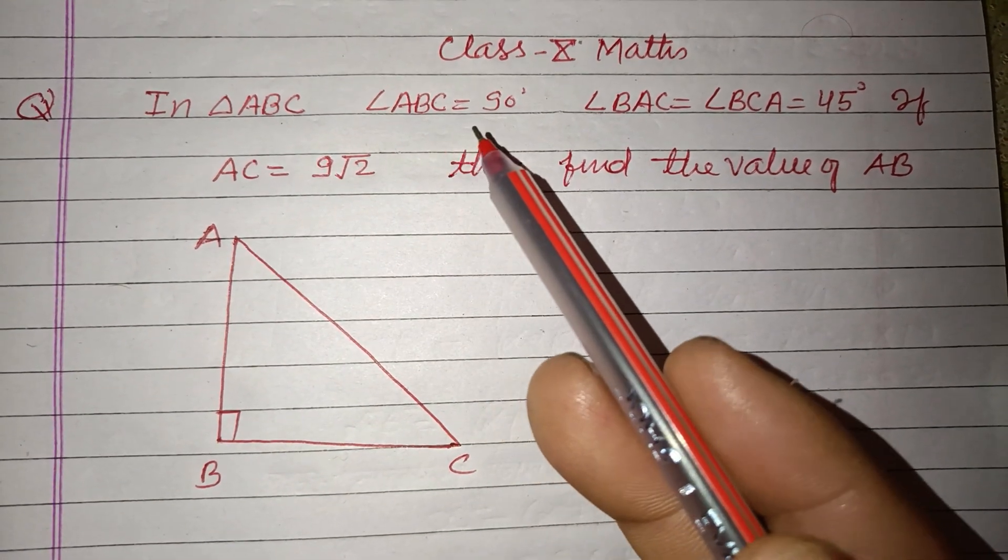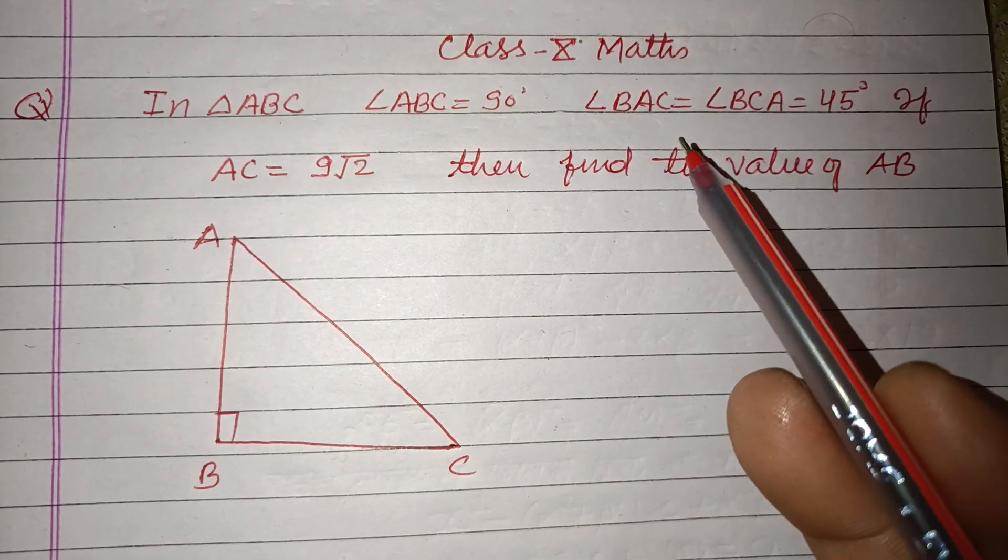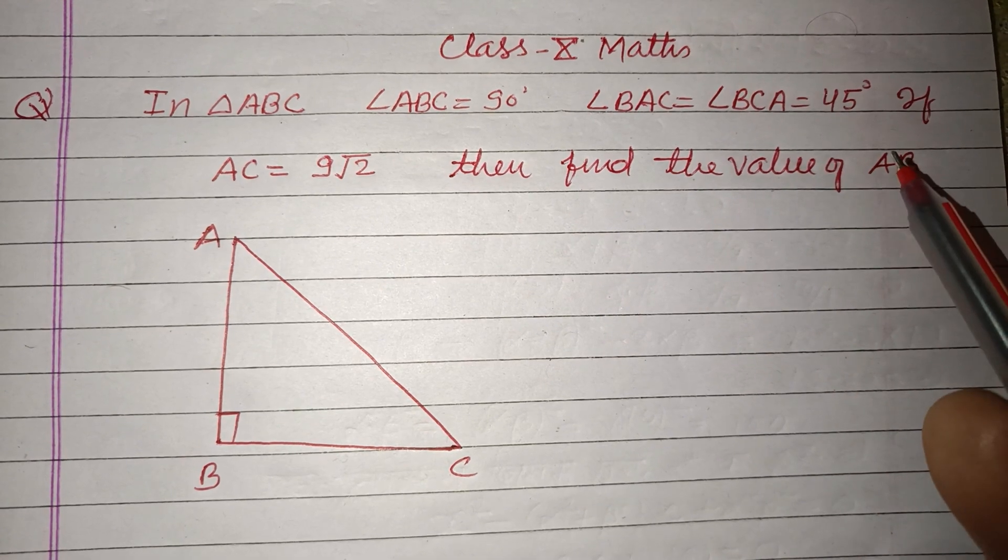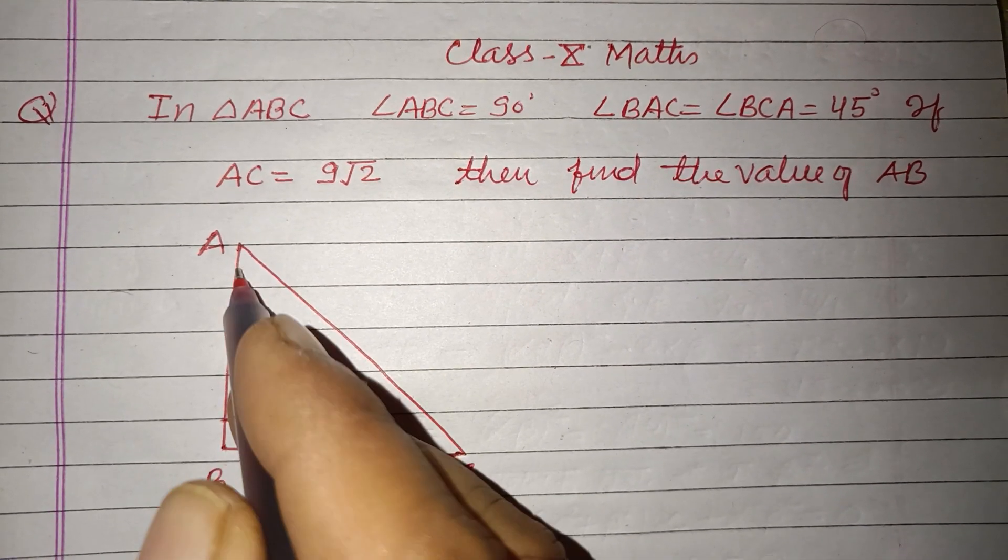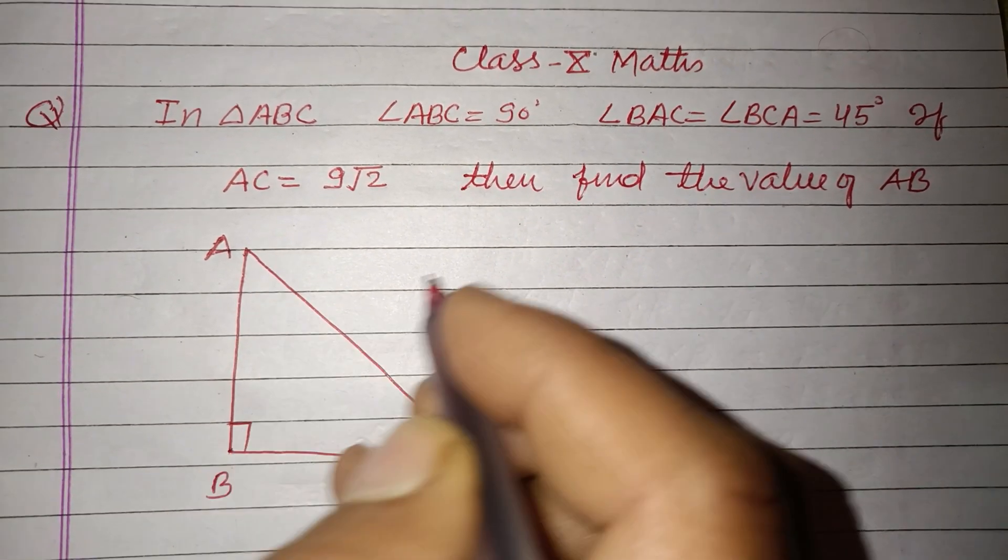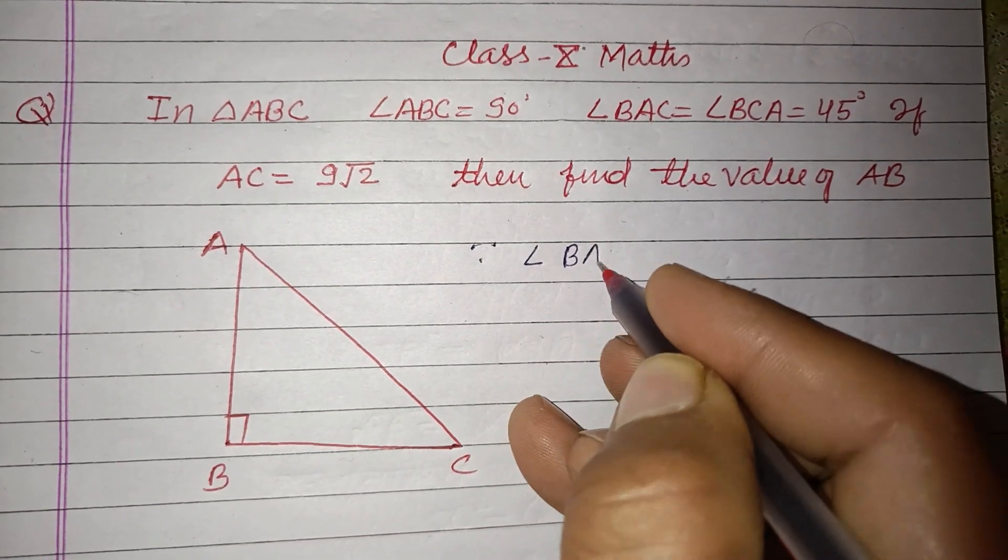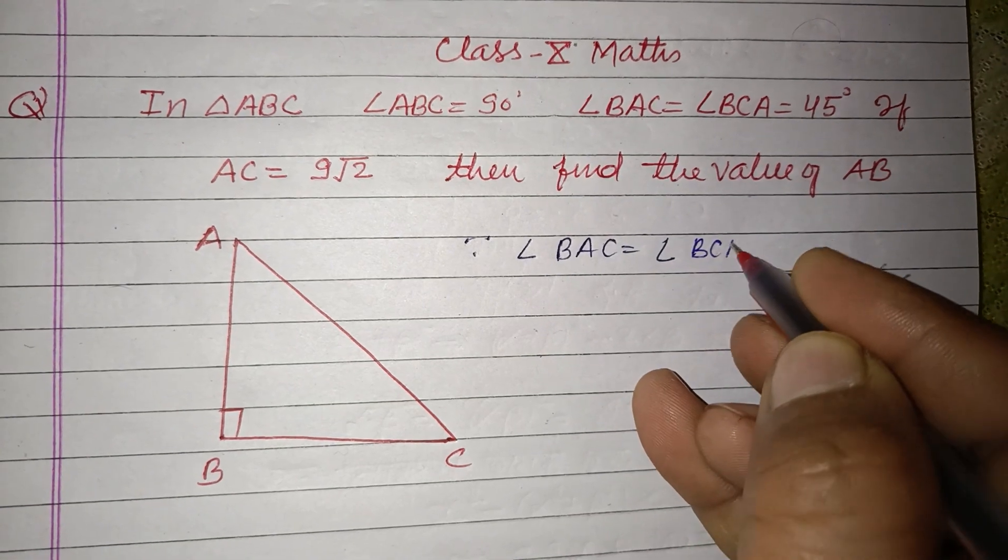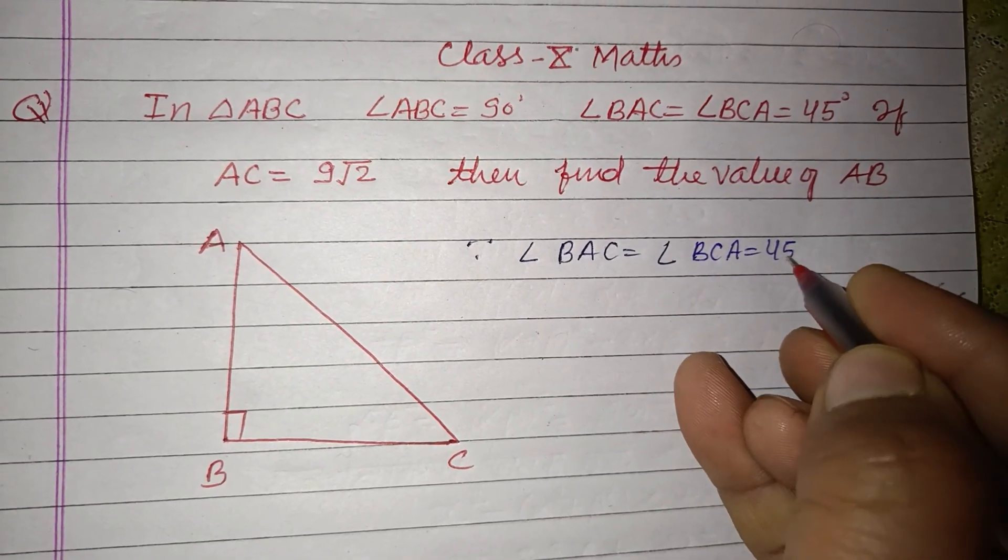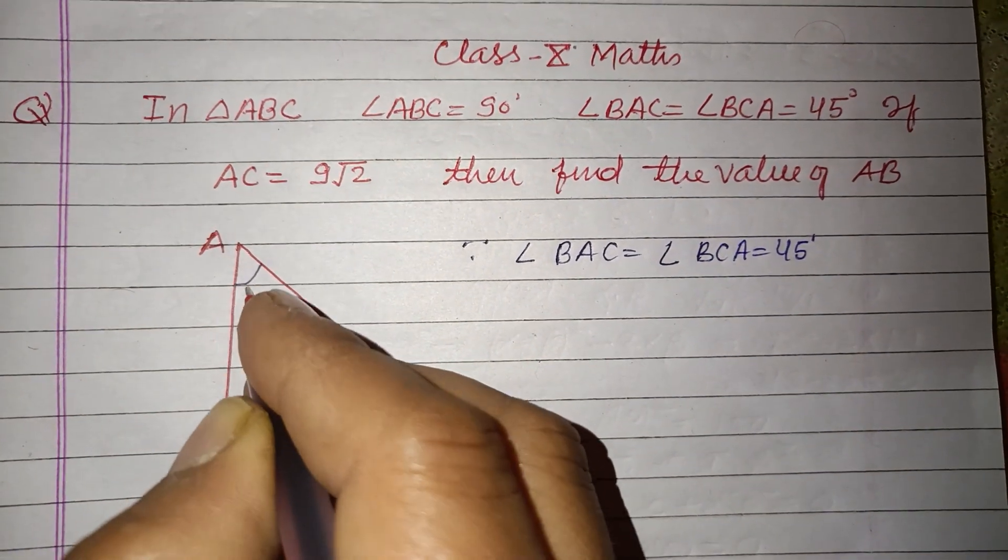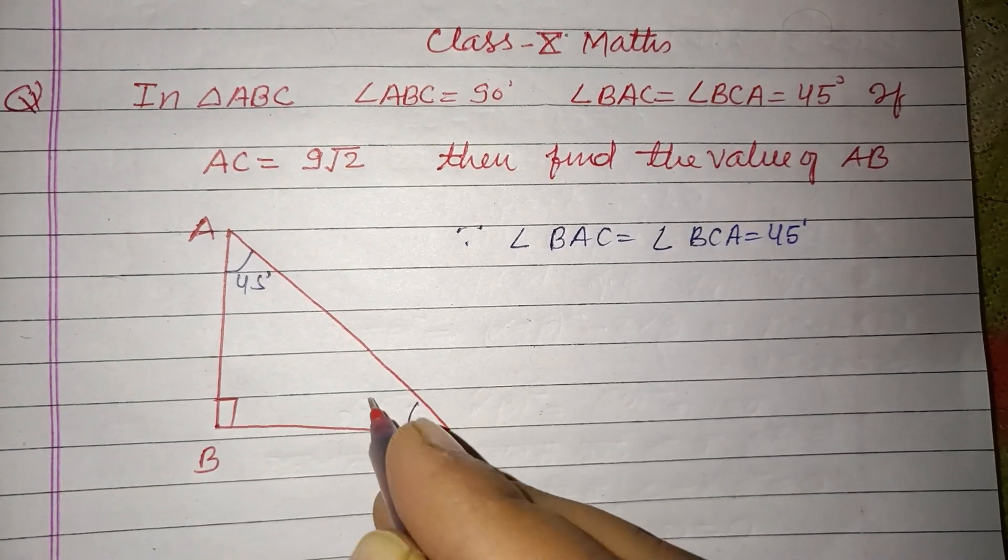In triangle ABC, angle ABC is 90°, angle BAC equals angle BCA equals 45°. Since angle BAC equals angle BCA, that is given to us as 45°, so this is 45° and this is 45°.